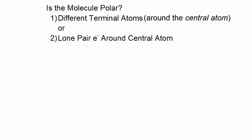I'd like to share with you a way of determining if a molecule is polar. Either one of these two criteria must be met: either there are different terminal atoms around the central atom, or there are lone pair electrons around the central atom.